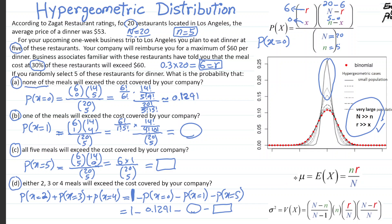The average or expected value mu for the hypergeometric random variable X is n times p, where p equals R over N. R is 6 restaurants and N is 20 total restaurants. Intuitively, when you have 6 expensive restaurants out of 20 total, if asked for the probability of picking an expensive one in one trial, you'd say 6 divided by 20. That's your probability p, and n times p gives the expected value, similar to binomial.